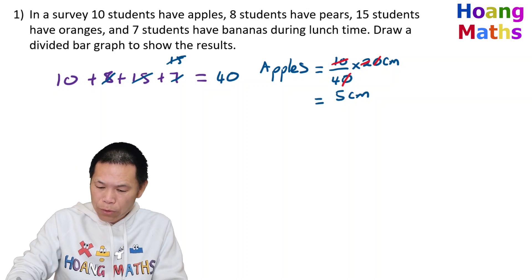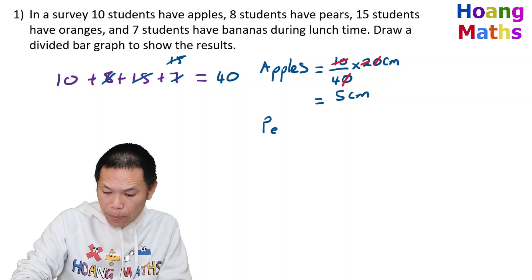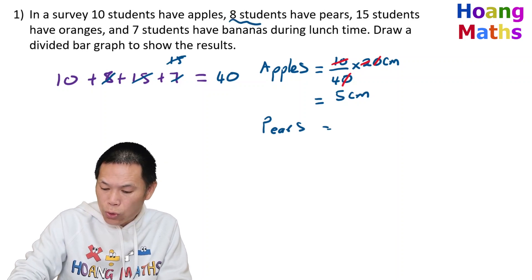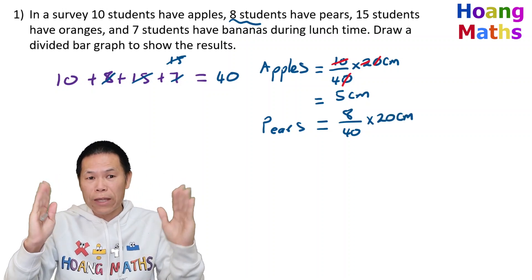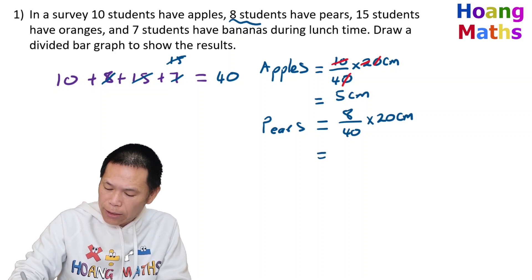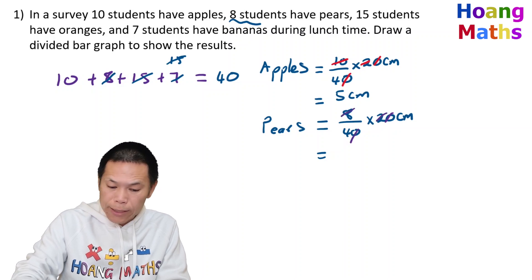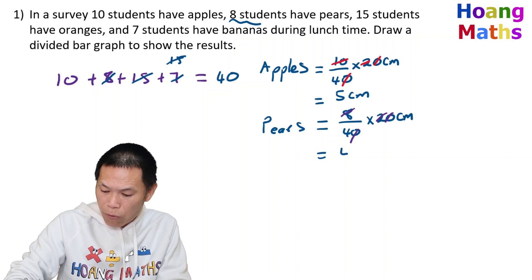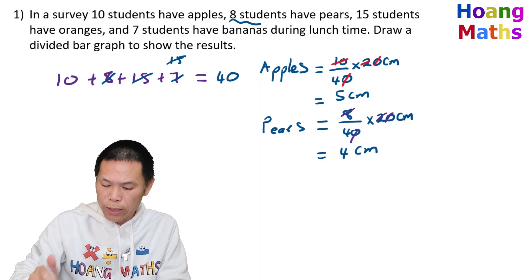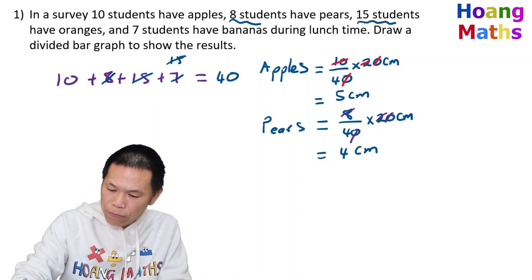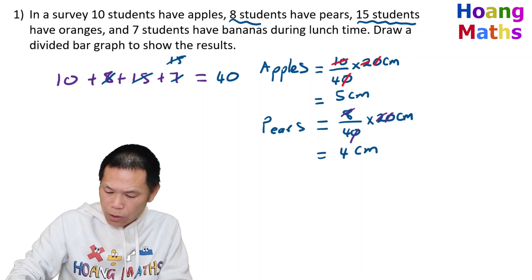Next, for pears: we have 8 students, so 8 over 40 times 20 centimeters. The 40 and 20 cancel — this gives us 16 divided by 4, which is 4. So pears is 4 centimeters. Or just put 8 over 40 times 20 on a calculator.